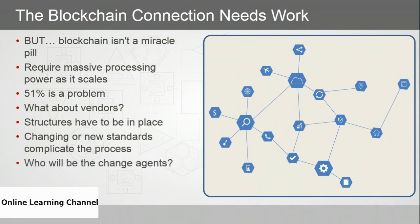Who will be the change agents? Who will champion this, drive it, make it real? We have lots of change agents driving blockchain, but the Internet of Things and the implications of a global blockchain solution will certainly be a daunting task. Work is already being done — groups like the Trusted IoT Alliance focus on making IoT secure — and perhaps you're a change agent who will get the ball rolling.